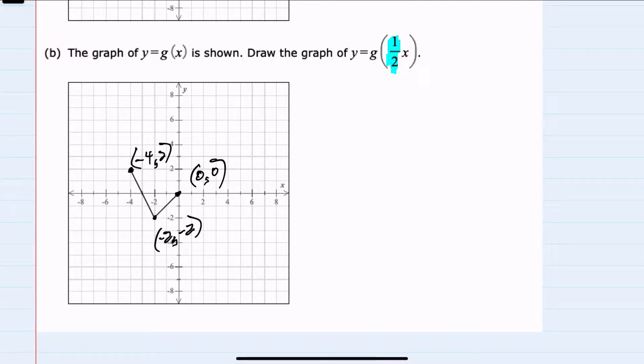And so for the original function, I can see that putting in a negative 4 has an output of 2. Now putting in a negative 8 would have an output of 2 because half of negative 8 would be the negative 4. So here we have negative 8, 2.